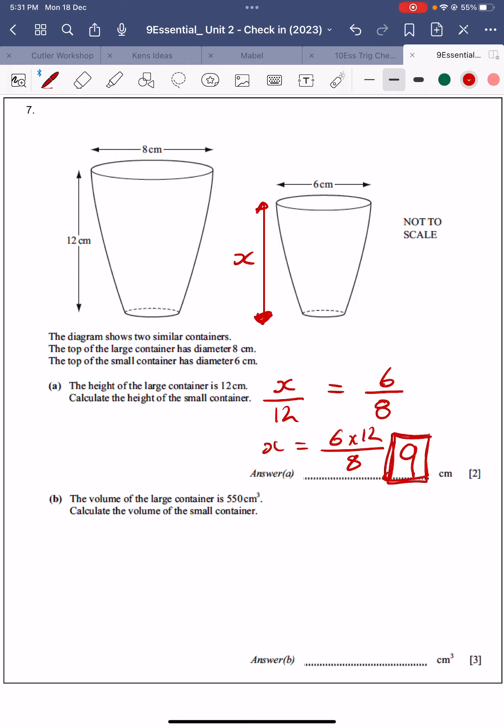You can also do the scale factor a different way. You can say that from here to here is times by 8 over 6, or that's actually 4 over 3. Well, that's approximately 1.333 recurring, right? So you could do it that way.